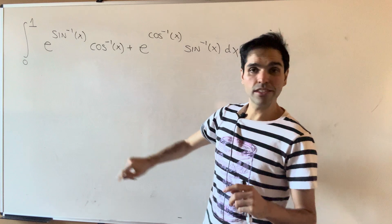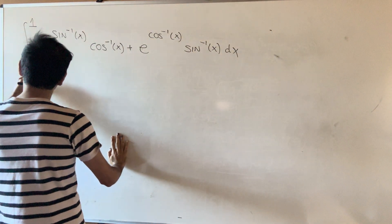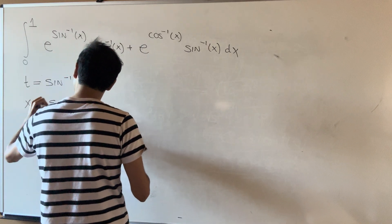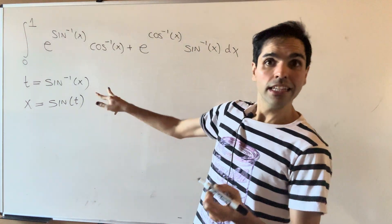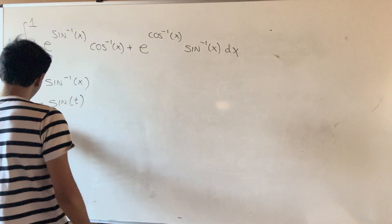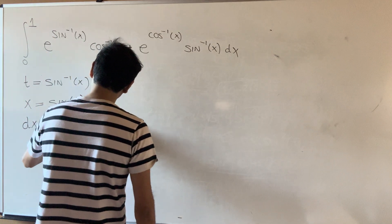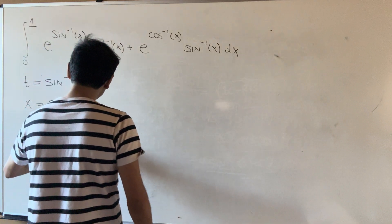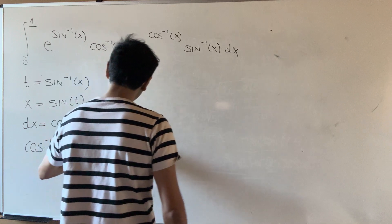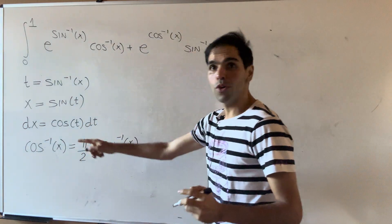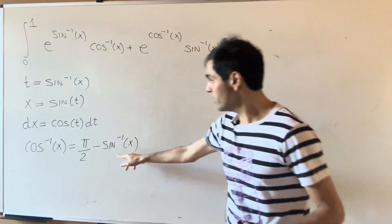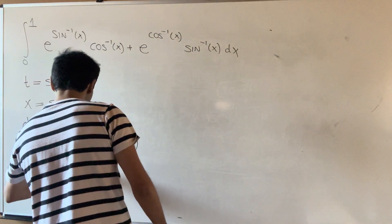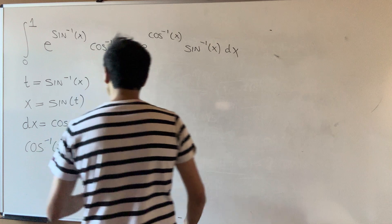So for this first integral, let's use a u-substitution. Let's set t = arcsin(x), in other words x = sin(t). Then on the one hand, dx = cos(t) dt. And also, what is arccos(x)? Well, it's just π/2 minus arcsin(x), because in a right triangle the two non-90-degree angles add to 90 degrees. So arccos(x) becomes π/2 minus t.